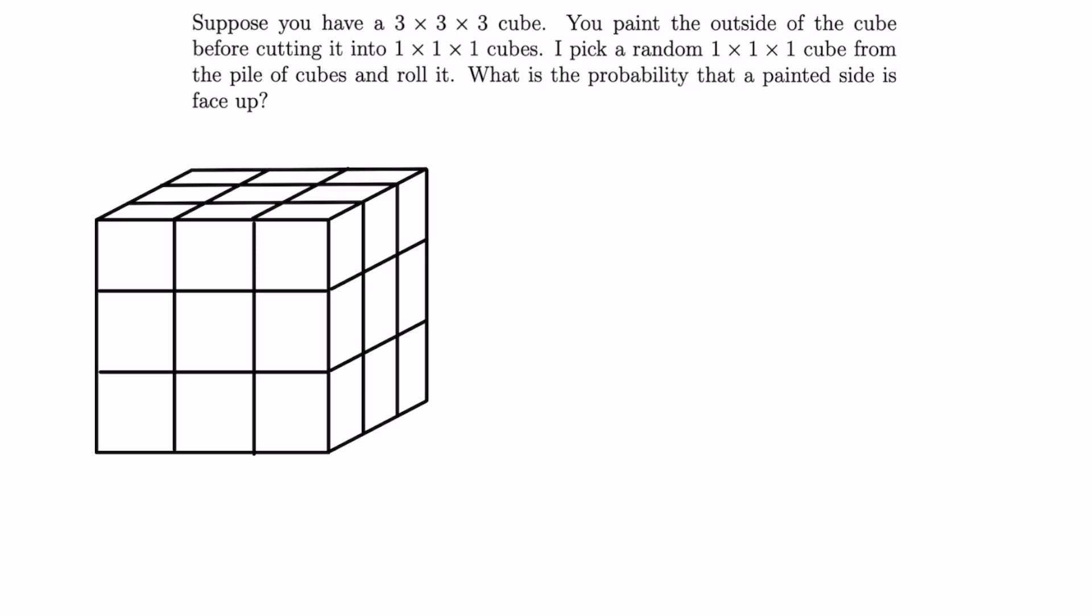Okay, so how can we solve this problem? Well, if you can imagine a 3×3×3 cube, you can observe that of the 27 cubes we get after cutting it into the 1×1×1 cubes, the corner cubes will have 3 painted sides, the edge cubes will have 2 painted sides, and the center cubes of each face will have 1 painted side, and the center cube will have no painted side.